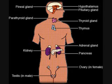Prolactin. Gland: Anterior Pituitary. Function: to stimulate production and secretion of milk.